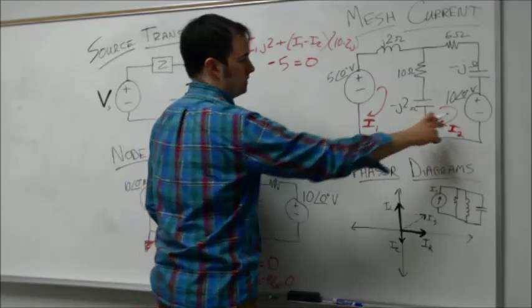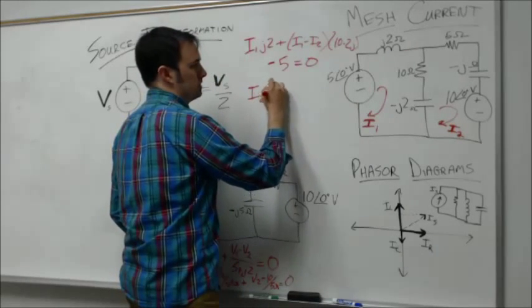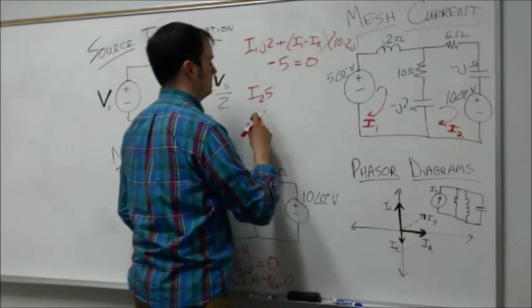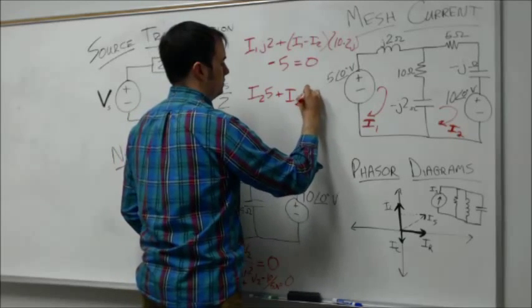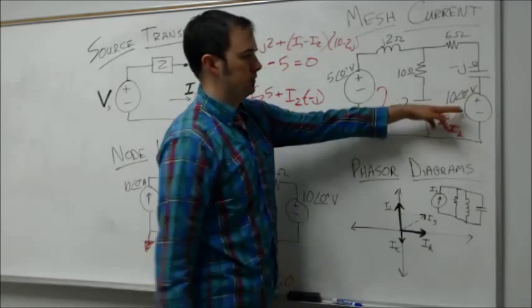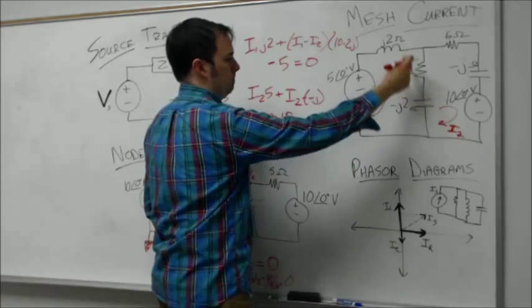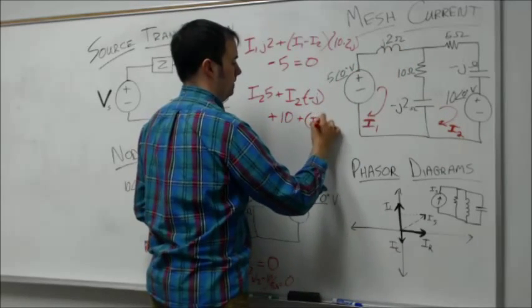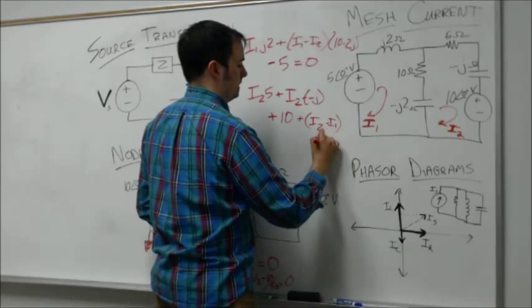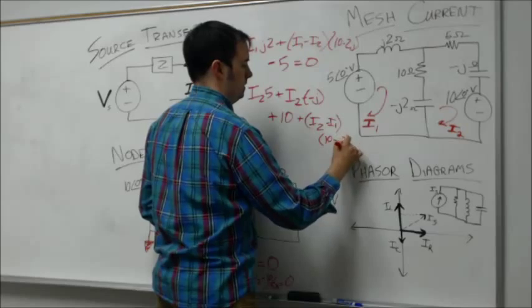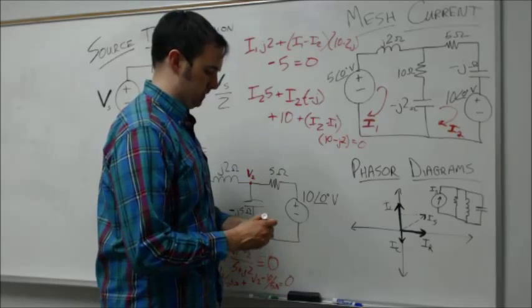We write another equation for i2: i2 times 5 ohms for the resistor, i2 times negative j for the capacitor, plus 10 volts dropped across the source, and i2 minus i1 times this combined impedance 10 minus j2 equals zero. Again, standard mesh current equations just dealing with complex impedances.